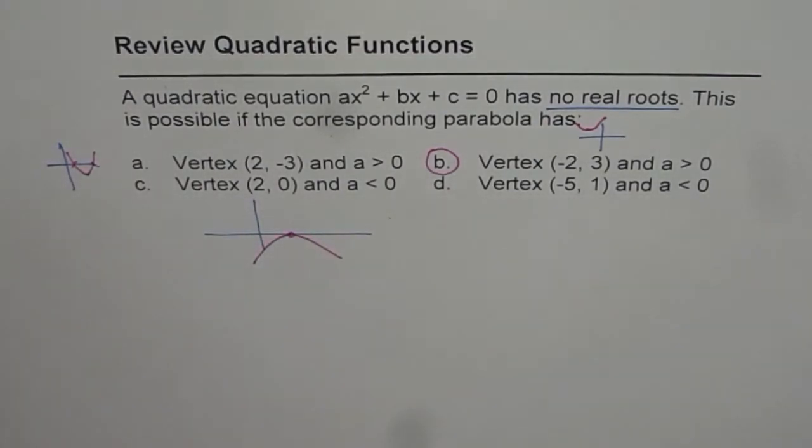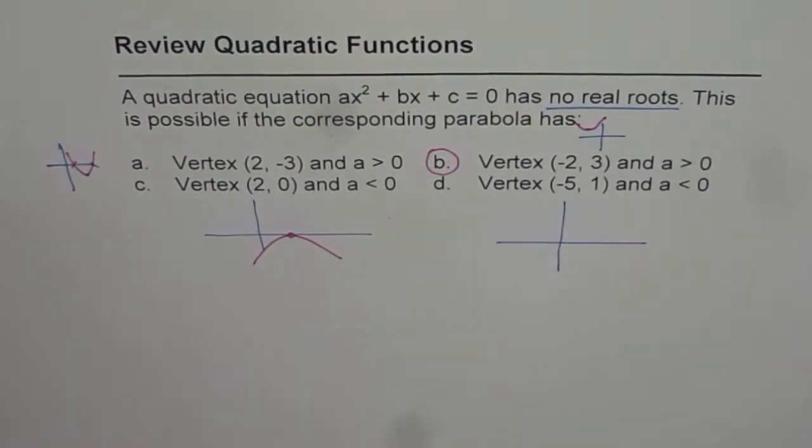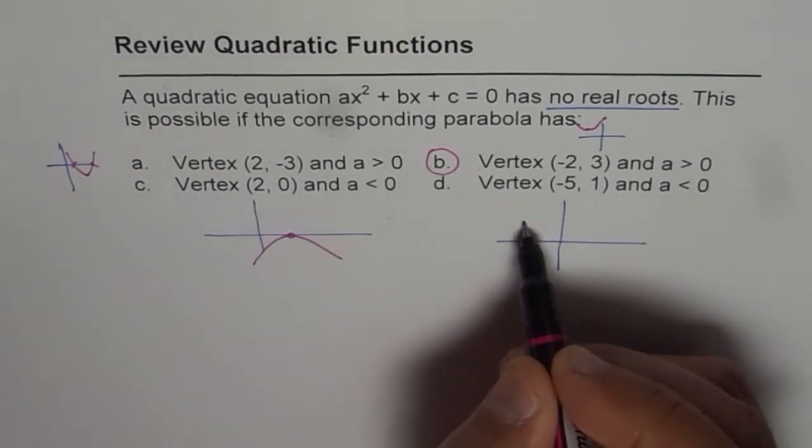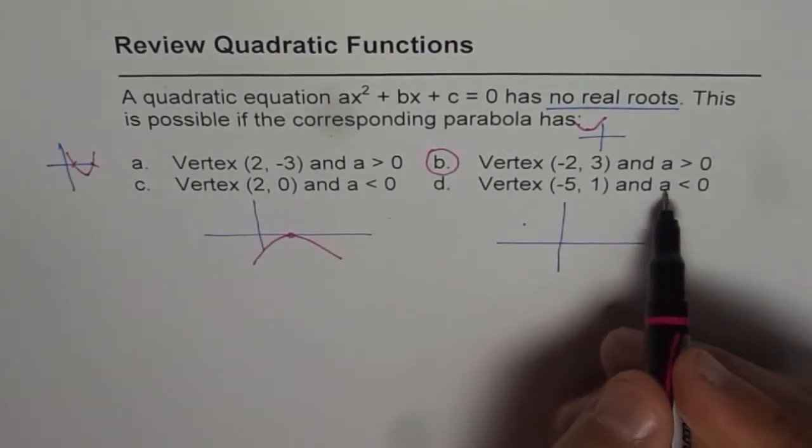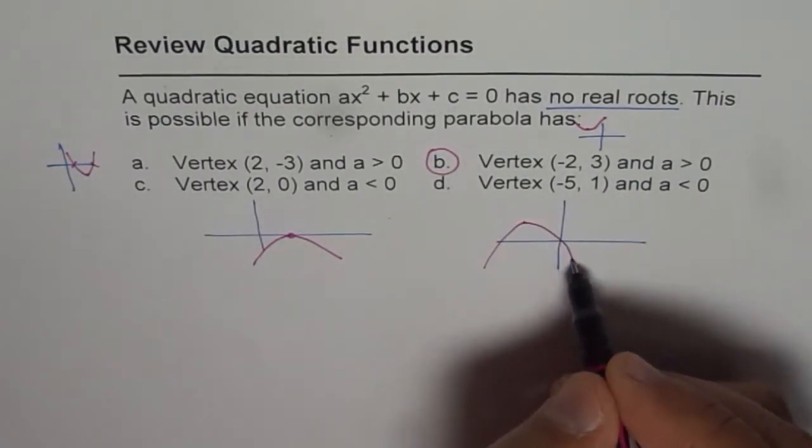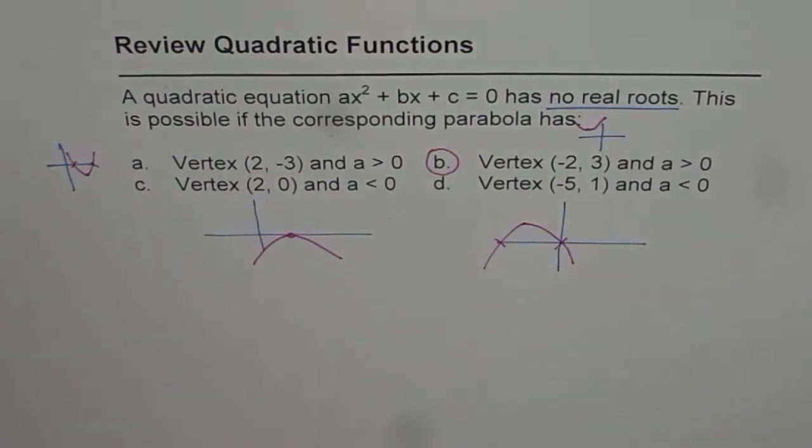And for the last one, the vertex is at (-5, 1). That means (-5, 1) somewhere here, a < 0 means it opens downwards, so it will have two values, two real solutions.